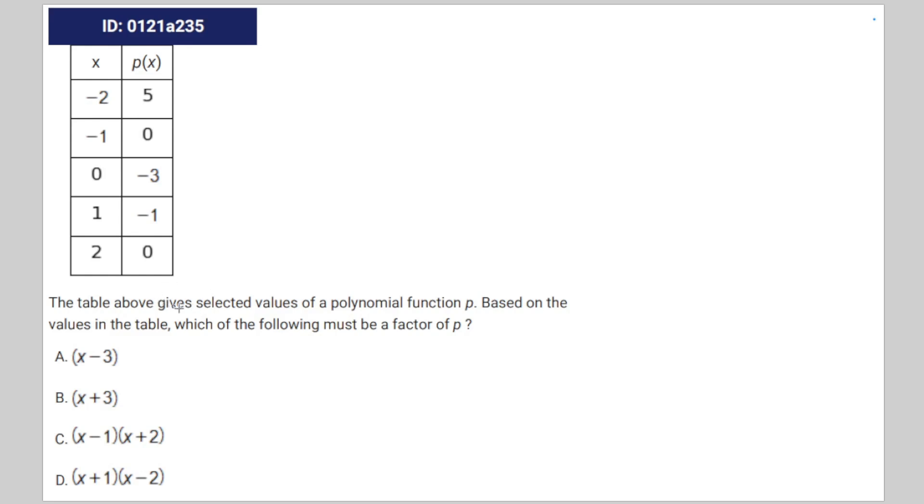We're given the following math question. In the table above, we have selected values of a polynomial function p. Based on the values in the table, which of the following must be a factor of p?